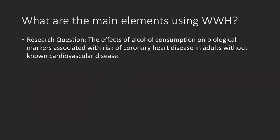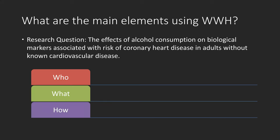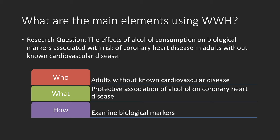Let's look at the example: the effects of alcohol consumption on biological markers associated with the risk of coronary heart disease in adults without known cardiovascular disease. Who is adults without known cardiovascular disease; what is the protective association with coronary heart disease; and how is examining the biological markers.